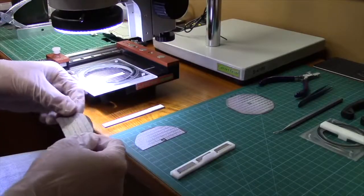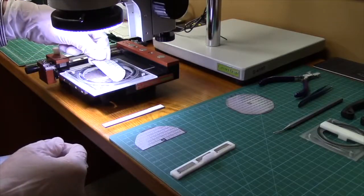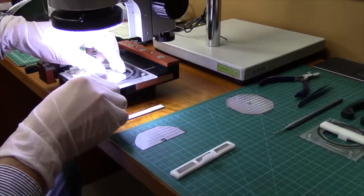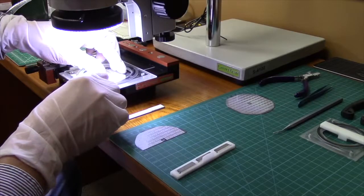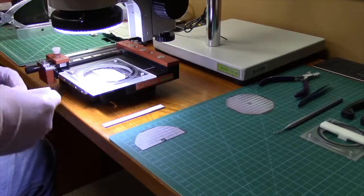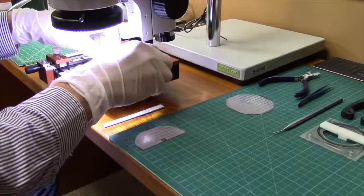To make the horizontal cleave, we will use the Flip Scribe for the initial scribe. We find loading samples in the holder on the Flip Scribe platform provides better control while making the scribe.